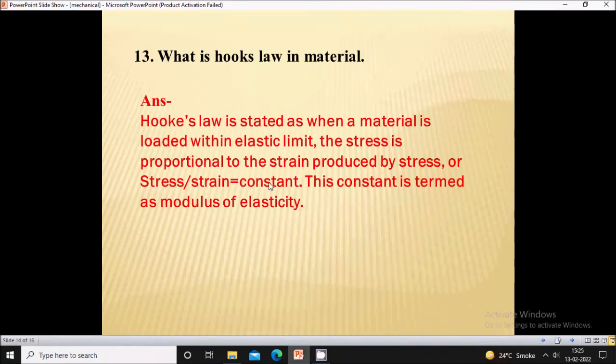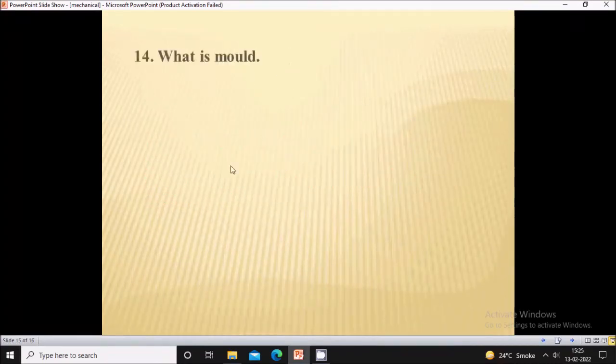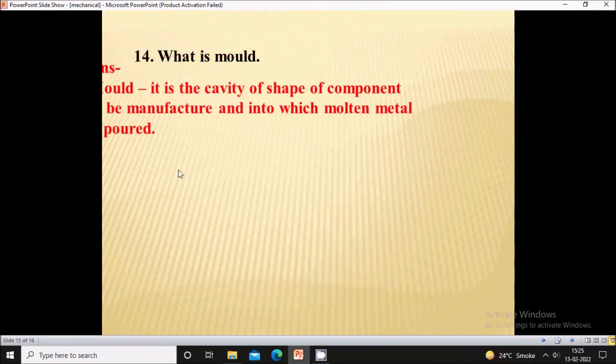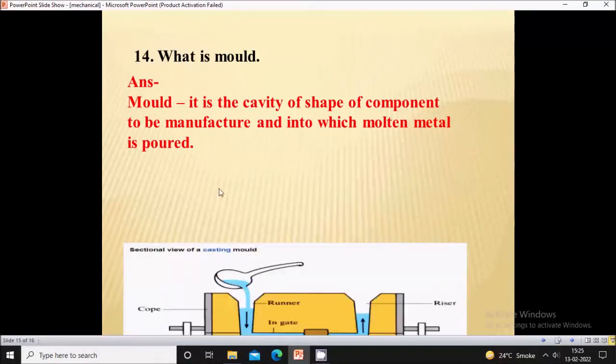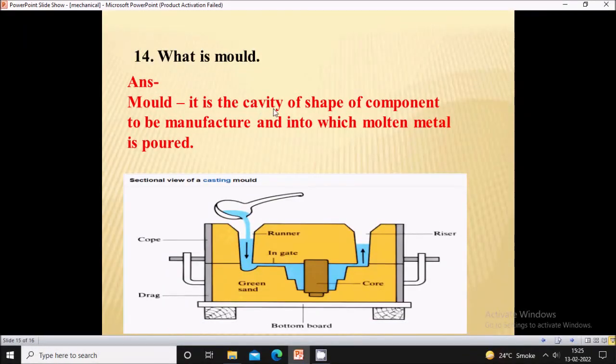What is a mold? A mold is the cavity of the shape of component to be manufactured, into which molten metal is poured. Here you can see the mold and the core, which is used to create the hollow part.